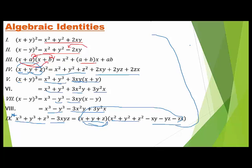Students, learn these algebraic identities. You also have to make a small project based on these identities — for example, proving that (x + y)² equals x² plus y² plus 2xy. This is your holiday homework. Some students will prove the Pythagorean theorem, some will prove the first identity, and some the second.